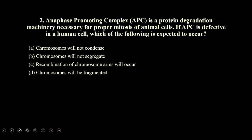The second question: the anaphase promoting complex is a protein degradation machinery necessary for proper mitosis of animal cells. If this complex is defective in humans, the segregation in anaphase is not going to happen. Option A — chromosomes will not condense — no. Option B — chromosomes will not segregate — yes. The correct option is B.